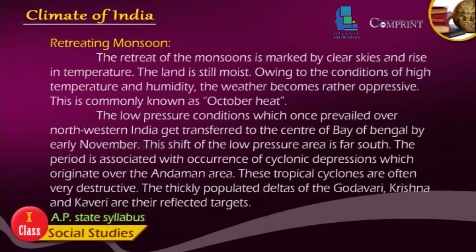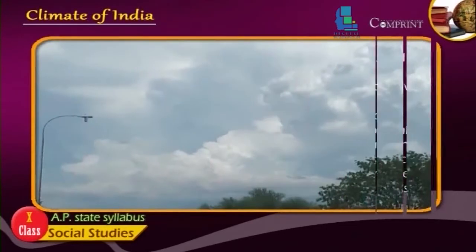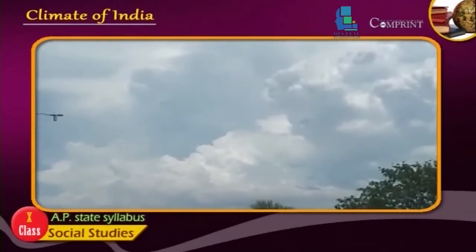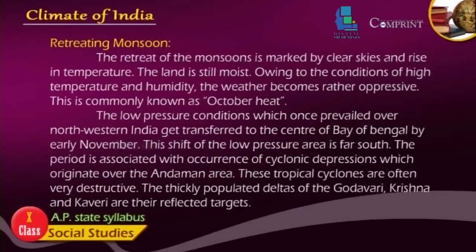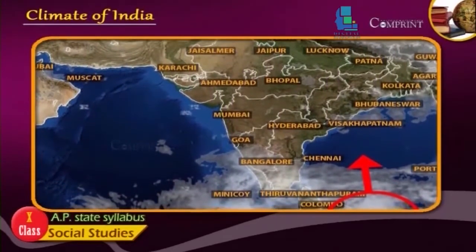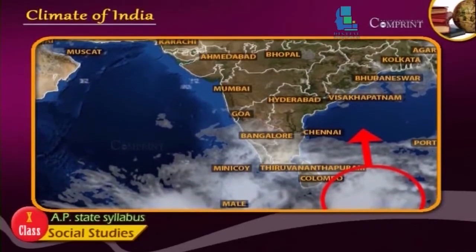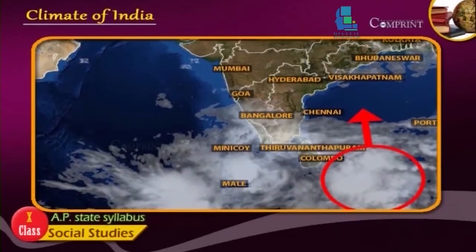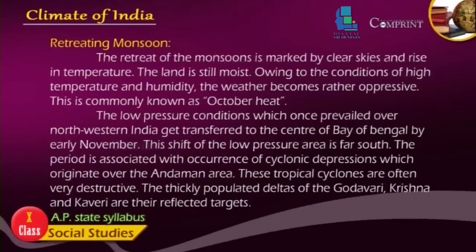The retreat of the monsoon is marked by clear skies and a rise in temperature. The land is still moist, and owing to the condition of high temperature and humidity, the weather becomes rather oppressive. This is commonly known as October heat. The low pressure conditions which once prevailed over northwestern India get transferred to the center of the Bay of Bengal by early November. This shift of the low pressure area is associated with the occurrence of cyclonic depressions originating over the Andaman area. These tropical cyclones are often very destructive. The thickly populated deltas of the Godavari, Krishna, and Kaveri are their frequent targets.